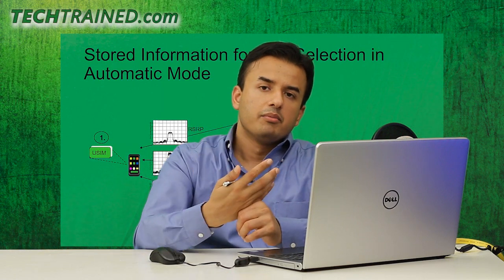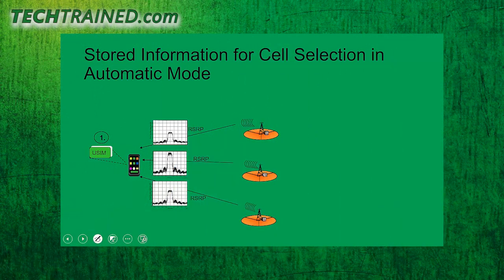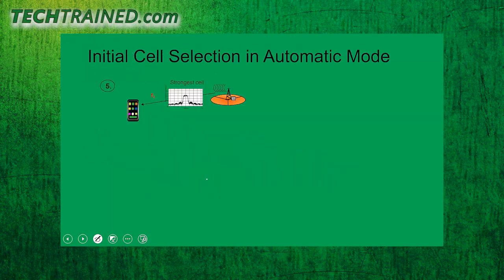As you can see on the screen, the UE has home PLMN information on the SIM card. After powering on, it starts reading coverage from all different cells from which it can receive signal, measuring Reference Signal Received Power (RSRP). To know which cell belongs to which PLMN, it reads System Information Block 1, which is part of the broadcast channel information, and identifies which cell belongs to which PLMN.